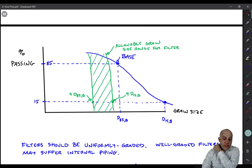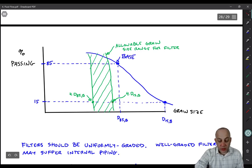So this point right there is 4 times D15 of the base. That's that criterion right there. And then this point right there is 4 times D85 of the base. So basically if we're on the left side of this line right there, our filter is going to be too coarse. And the base material will migrate through the filter and we'll lose the base material.